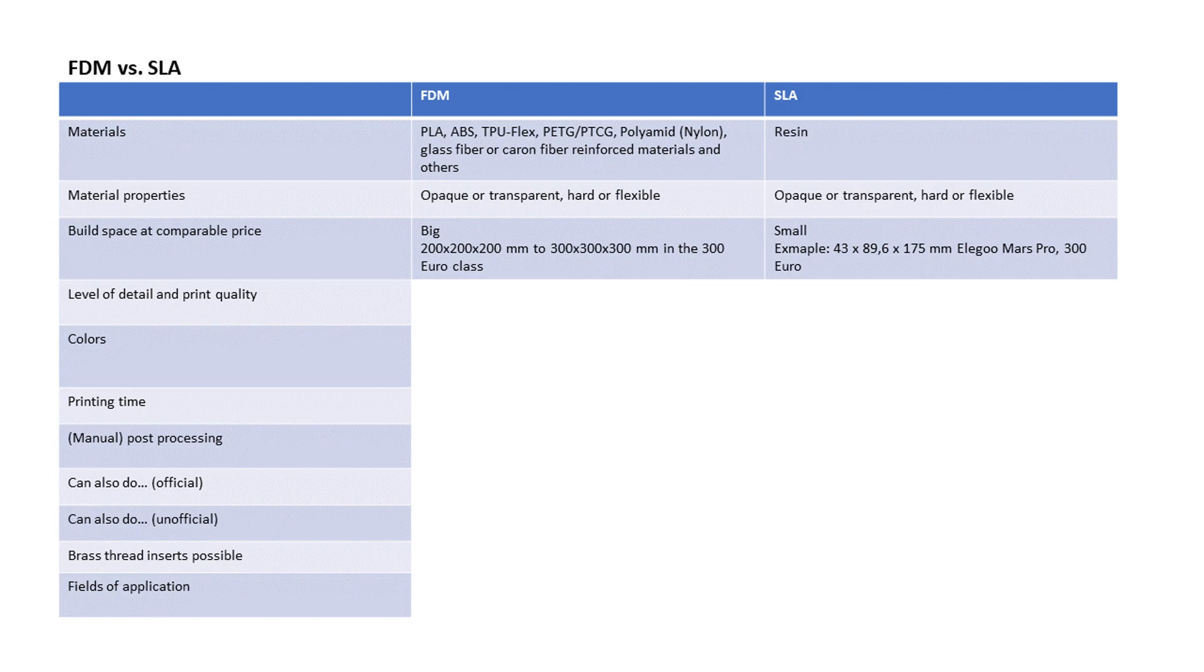However, within the same price range, FDM printers are always superior to SLA printers in regards of build space. FDM prints always have this typical 3D printing look: patterns of the printing path, visible layers and problems with fine details. SLA prints are cleaner and show much more fine details.